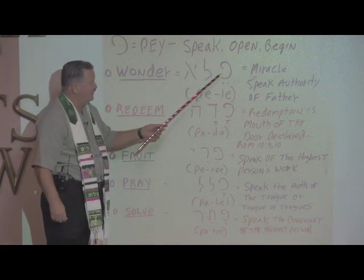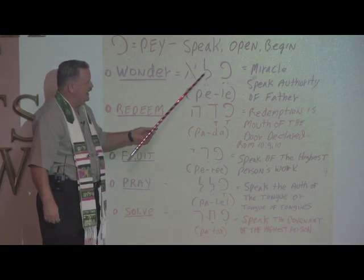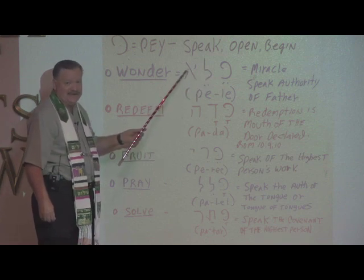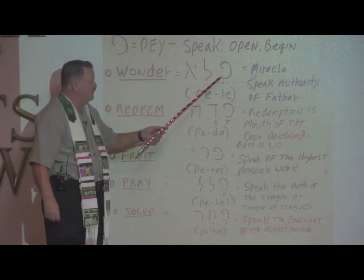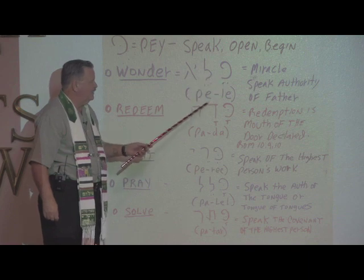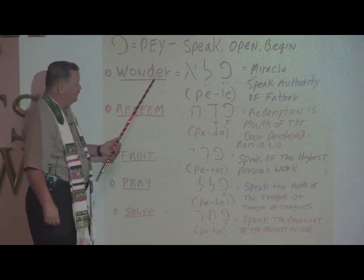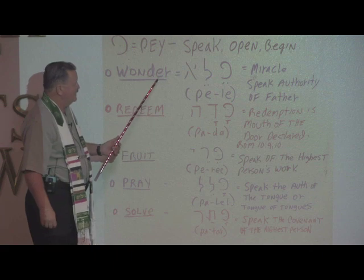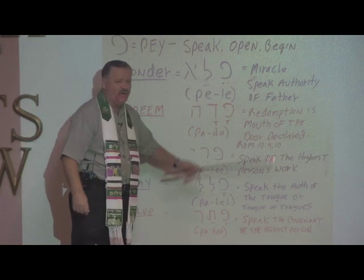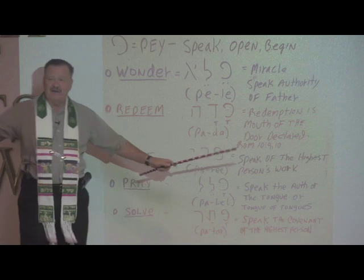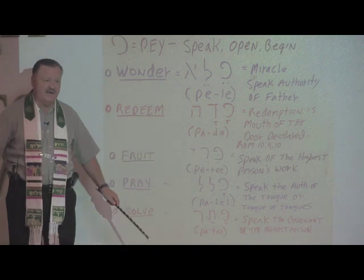Reading from right to left, this is the P sound because it's Pe. The two dots give the E sound. This is the Lamed, the L sound with E. And this is Aleph, which has no sound unless it has a vowel. So this is pronounced P-E-L-E — Pele. What does it mean? It's the idea of a wonder or miracle. If you're going to be involved with a miracle, you're going to be speaking with the authority of the Father. Hear from God, speak what God says in His authority, and you'll see a miracle.